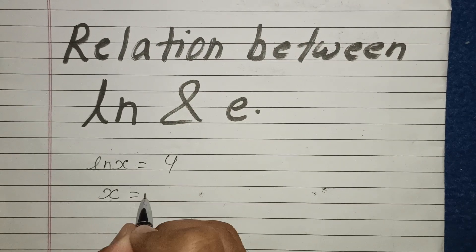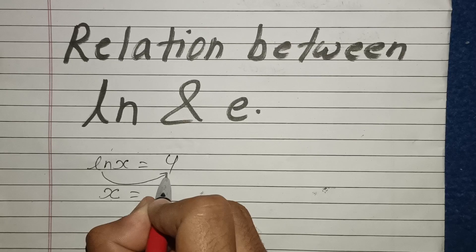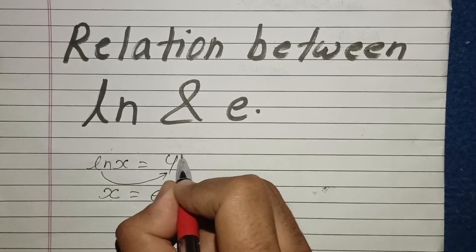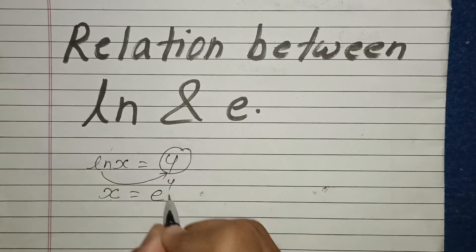Then look here, x is equal to, if ln goes here, it will become e exponential and this 4 will come to in the power.